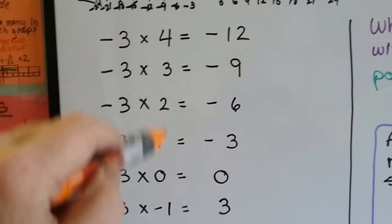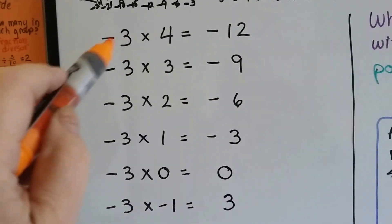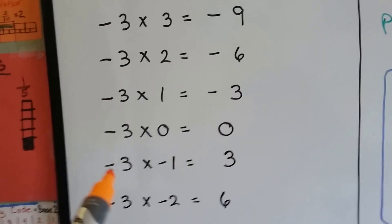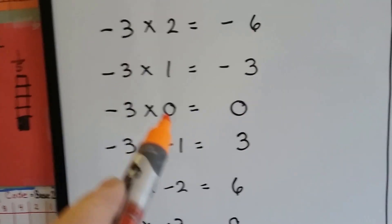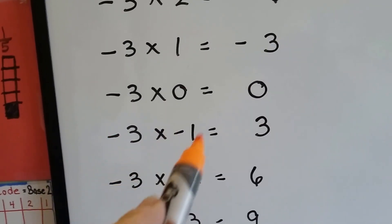Now look at the answers. When we're multiplying by a positive, and these are negative, we're getting a negative answer, see? Because these are unlike. We've got a negative times a positive. But look what happens when we get to below, on the number line below the 0, and we're now multiplying a negative 3 times a negative 1. Our answer's positive.